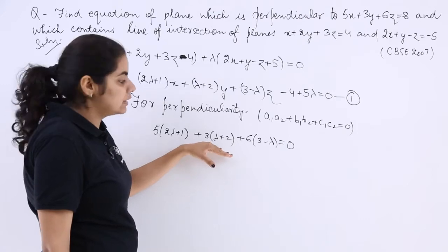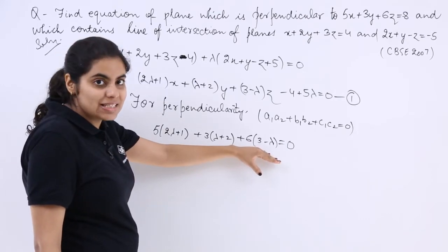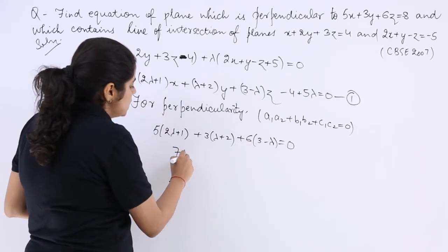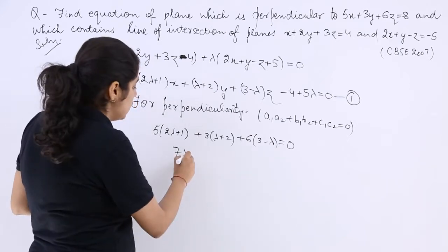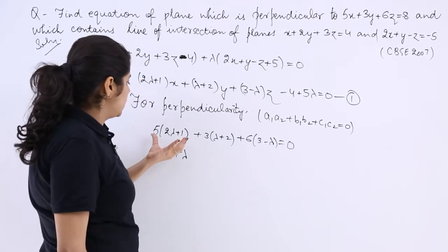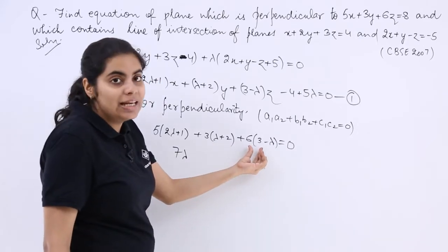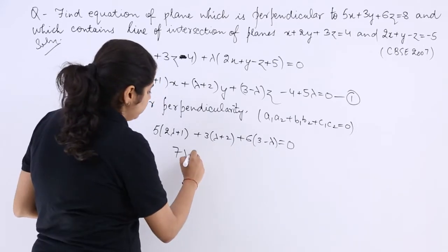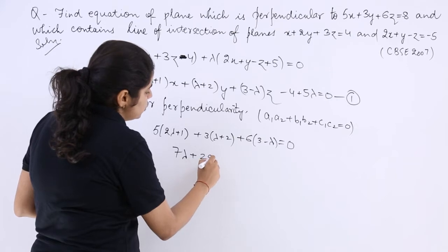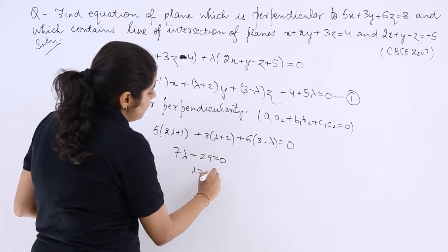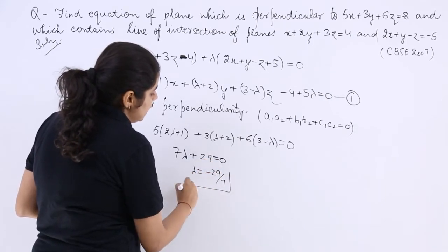Let us solve this for lambda. 10 lambda plus 3 lambda is 13 lambda minus 6 lambda which is 7 lambda. Also here it is 5 plus 6 which is 11, 11 plus 18 which is 29, which is equal to 0. So lambda is equal to minus 29 upon 7.